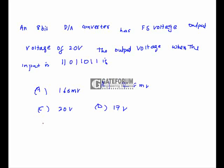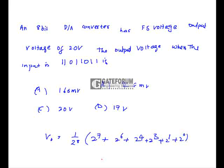An 8-bit DAC converter has a full-scale output voltage of 20 volts. The output voltage when the input is 1 1 0 1 1 0 1 1 is calculated as: V₀ = (1/2⁸) × (2⁷ + 2⁶ + 2⁴ + 2³ + 2¹ + 2⁰) = 219/256 × 20, which equals approximately 17 volts. That is option D is correct.